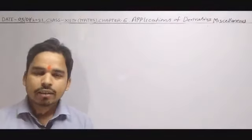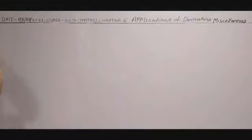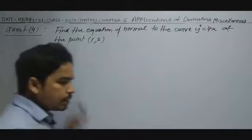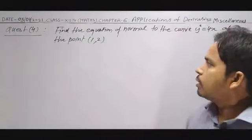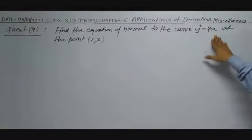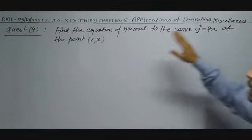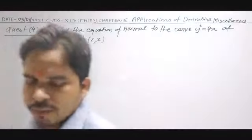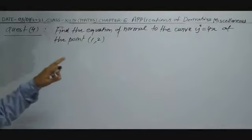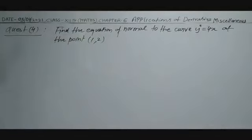Let us start with the question. This is question number 4 of miscellaneous chapter 6: Find the equation of normal to the curve y² = 4x at the point (1, 2). We have to find out the equation of normal to the curve y² = 4x at the point (1, 2). So the given equation of curve — solution.